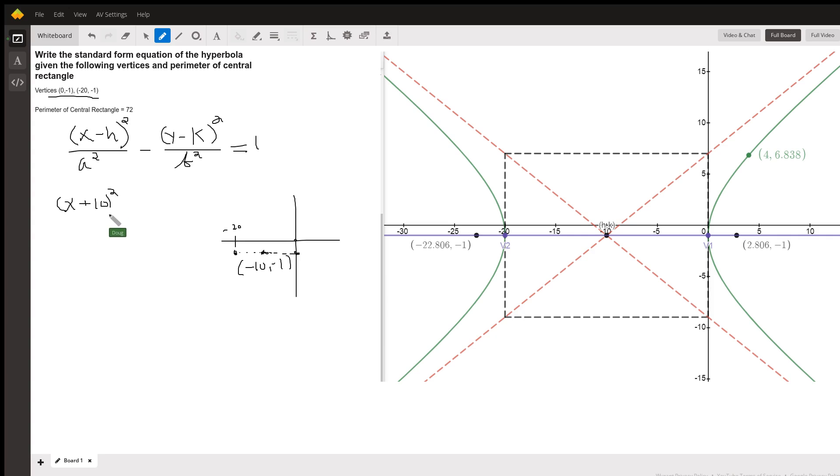Over a squared. Well, a is just the distance from the center to a vertex, so from negative 10 to 0, or from negative 20 to negative 10, is a distance of 10, and 10 squared is 100. Minus.